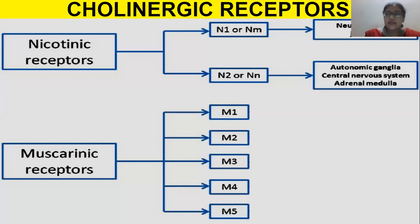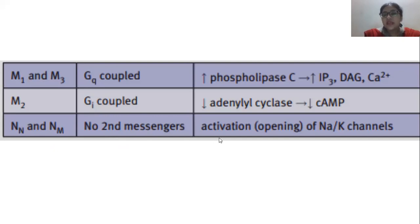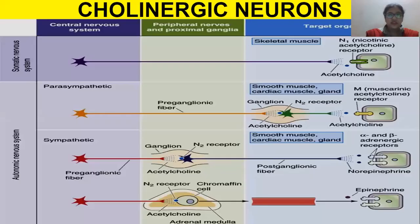Muscarinic receptors have five subtypes, M1 through M5, with M1, M2, and M3 being most abundant. They produce their impact through GPCRs. For nicotinic receptors, there is no second messenger involved; it is all about activation of sodium and potassium channels, which means action potential is involved.